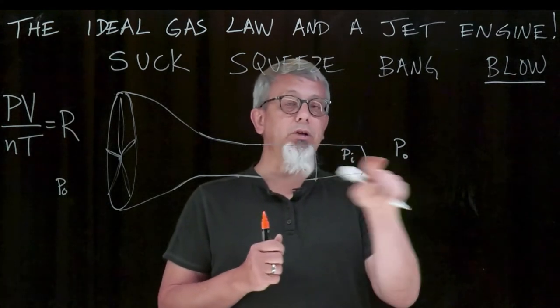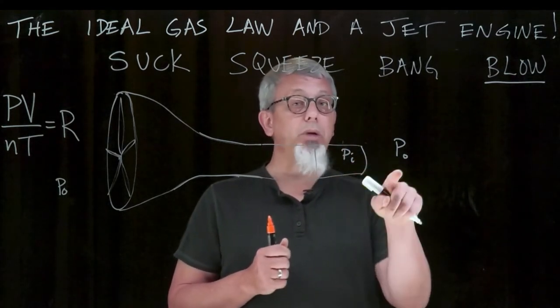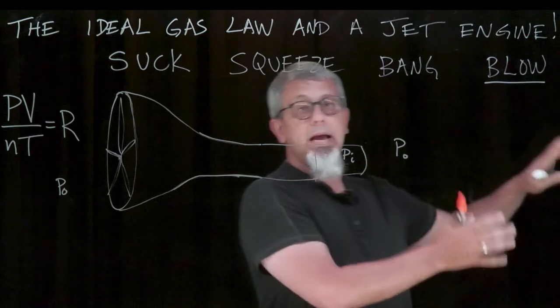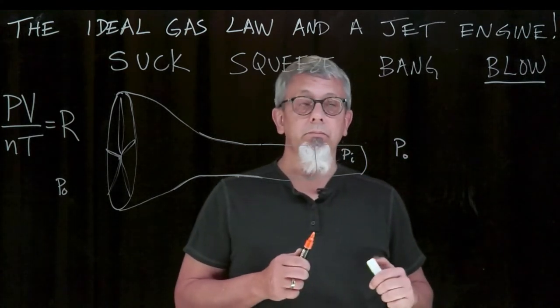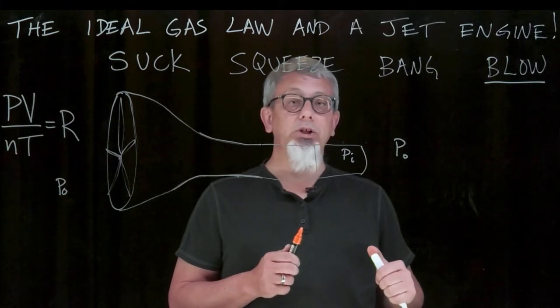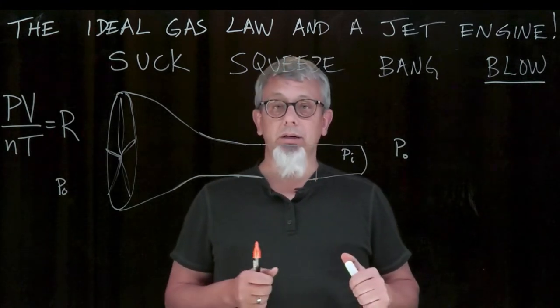That's the blow part. If we can get a big difference in pressure, where there's more pressure here than there's pressure outside, we'll blow everything out the back, and that'll create thrust, and that's how a jet engine works. So how do we create that difference in pressure? And here's where the ideal gas law comes in.